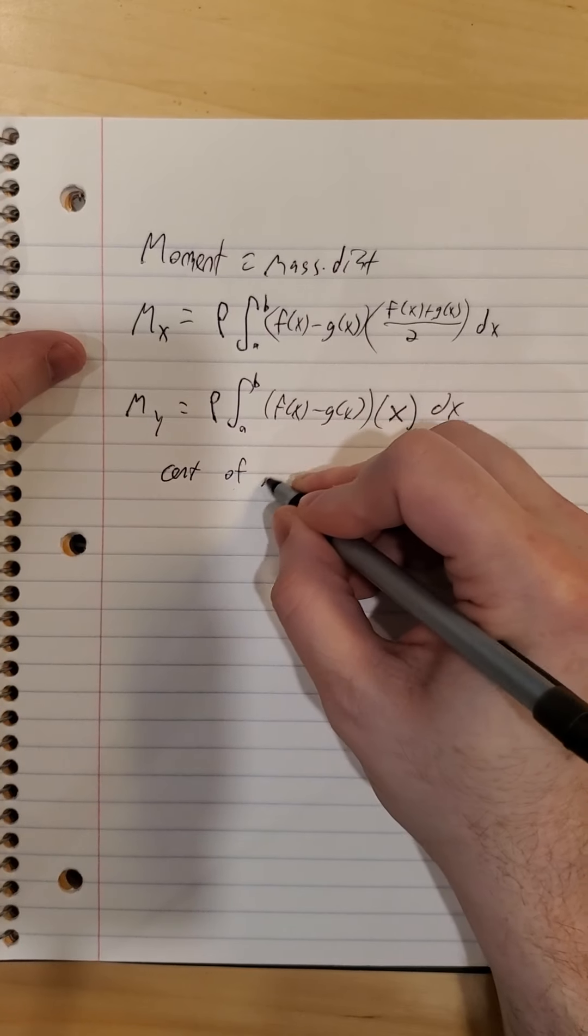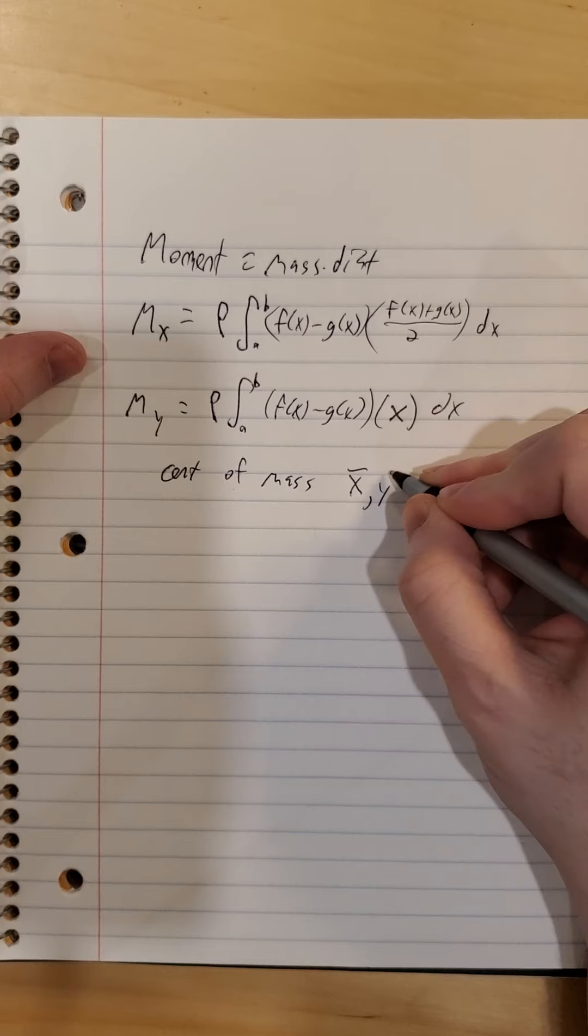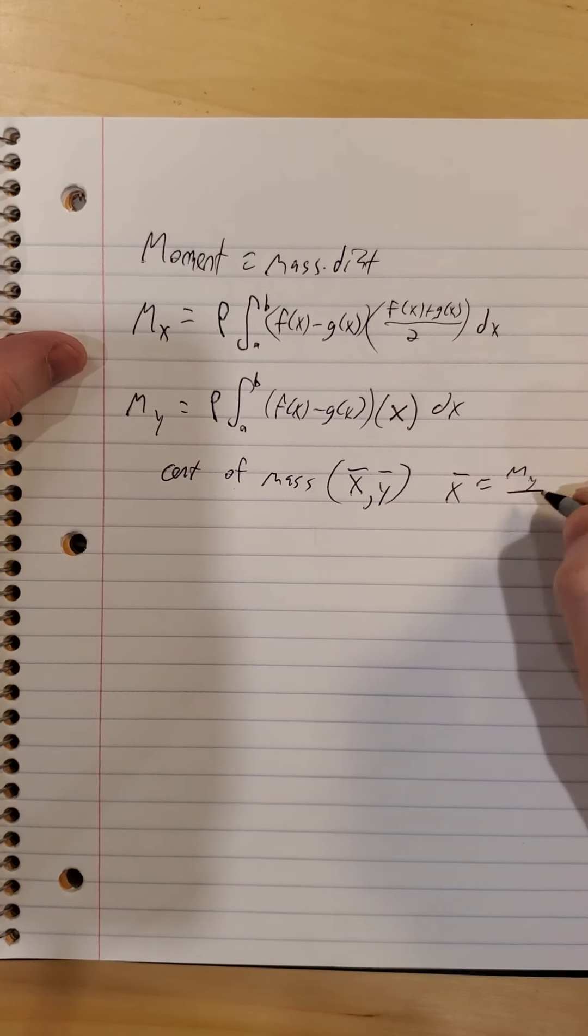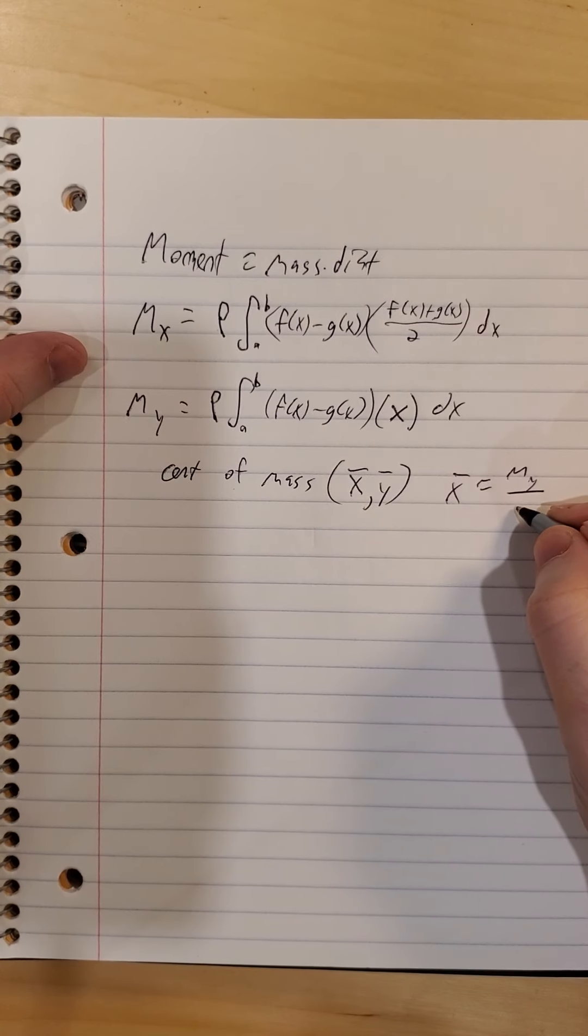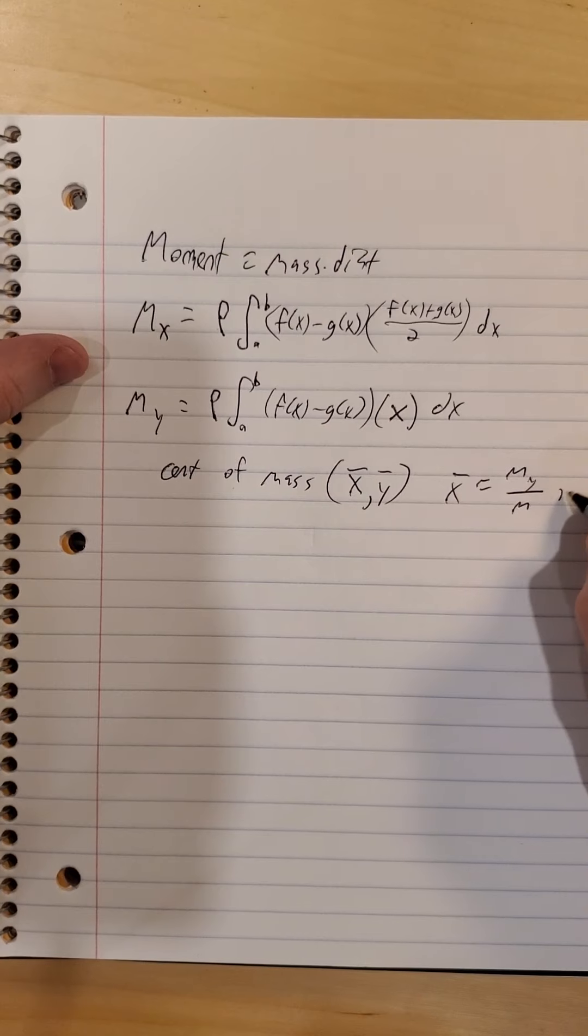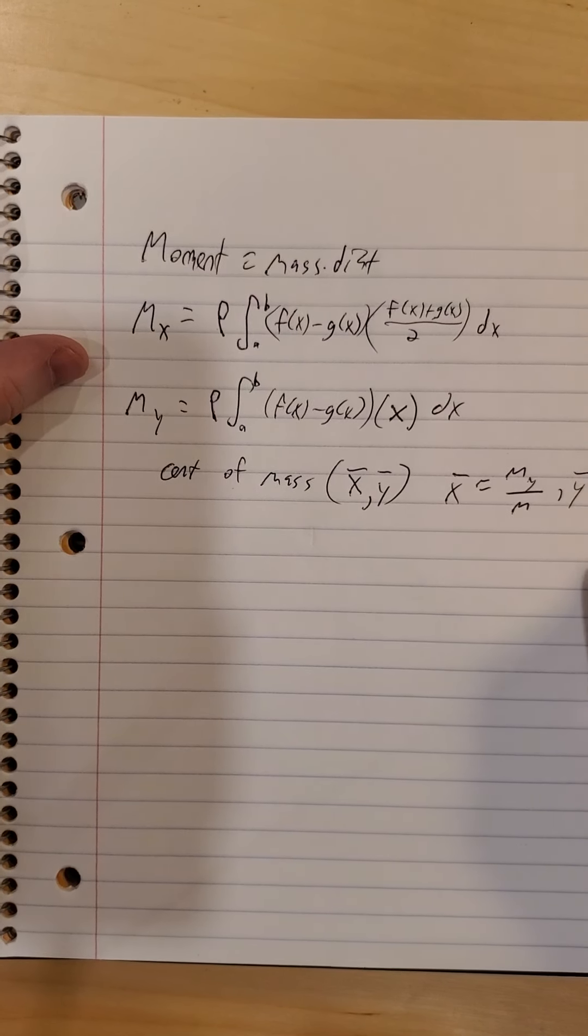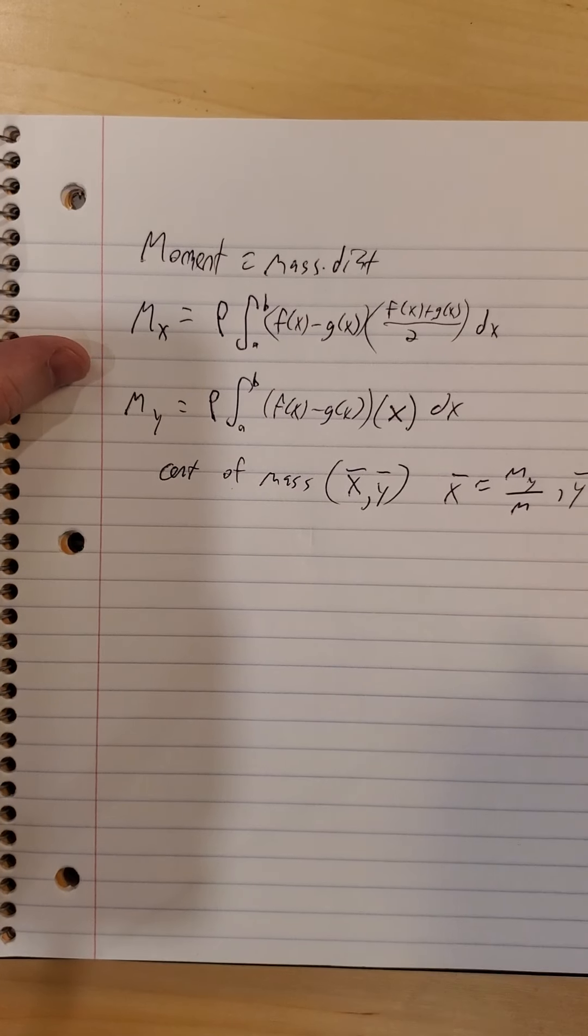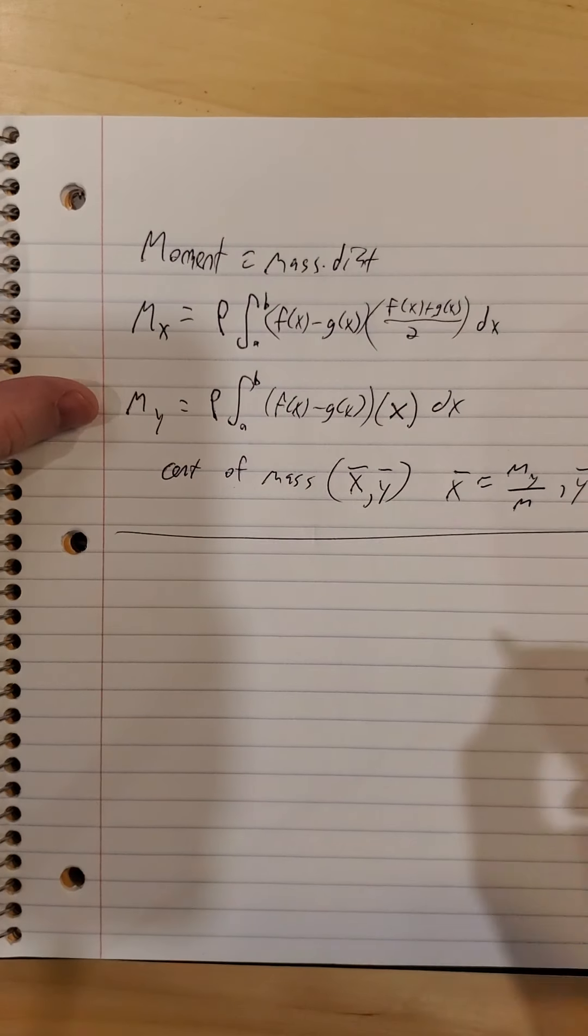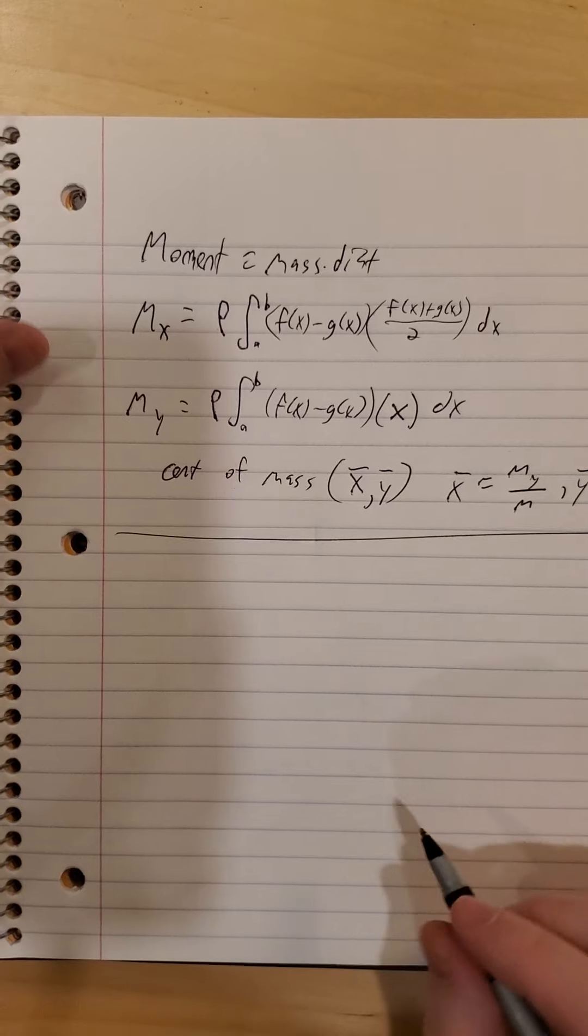So in our center of mass, x-bar, y-bar, x-bar is moment with respect to the y-axis over the total mass. Similarly, y-bar is moment with respect to the x-axis over the total mass. All right, so that's a lot to take in. Let's run through an actual example here.